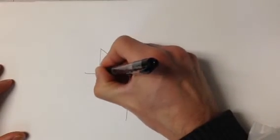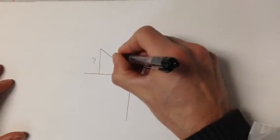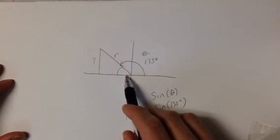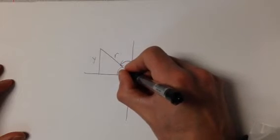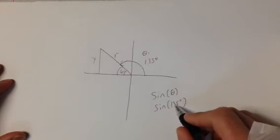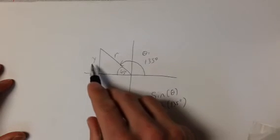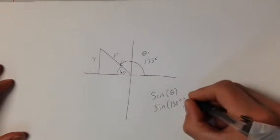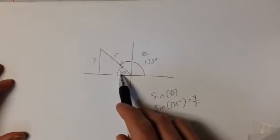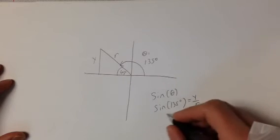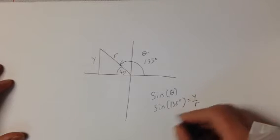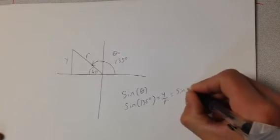So if I draw the triangle here, this is my y value, this is my r value. A little bit of geometry, and you can tell that the angle in here is 45 degrees. What that tells you is that the sine of 135, which is y over r, is the same as the sine of 45 degrees. So we call 45 degrees the reference angle. So the sine of 135 degrees is equal to the sine of 45 degrees.